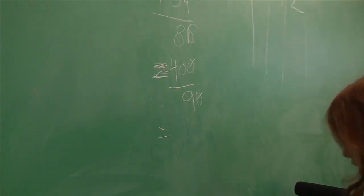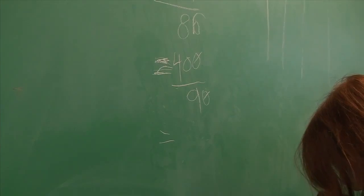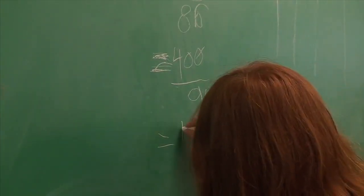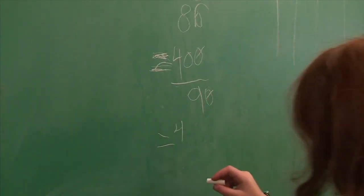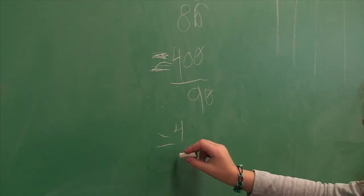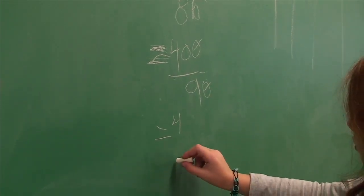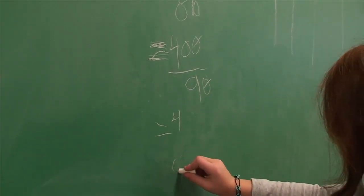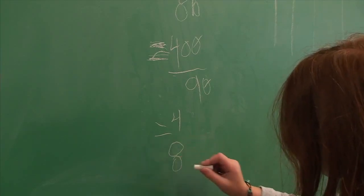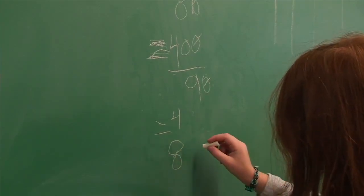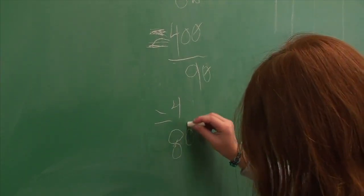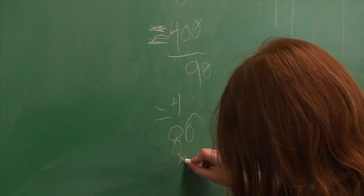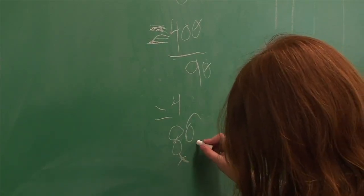40 divided by 9. 9, 18, 27, 36, 45. 4, 9, 800, 80, 77, 23, 25, 21, 24, 25, 26, 25, 27, 27, 28.